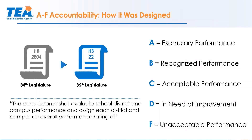With the passage of House Bill 2804 in the 84th legislature, that assigned an accountability system based on five domains, which then morphed into our current three-domain system based on House Bill 22. House Bill 22 mandates that the commissioner evaluate school district and campus performance and assign each district and campus an overall performance rating of A, B, C, D, or F — with A equaling exemplary performance, B being recognized, C being acceptable, D being in need of improvement, and F equaling unacceptable performance. F is essentially your new improvement required label.